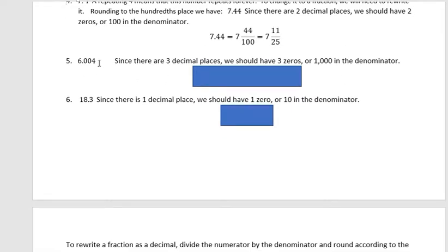In number five, we have six and four thousandths. That's three decimal places, so three zeros. And the six is still going to be six. It doesn't matter whether it's followed by a decimal or a fraction. Four over one thousand reduces to one over two hundred fifty.